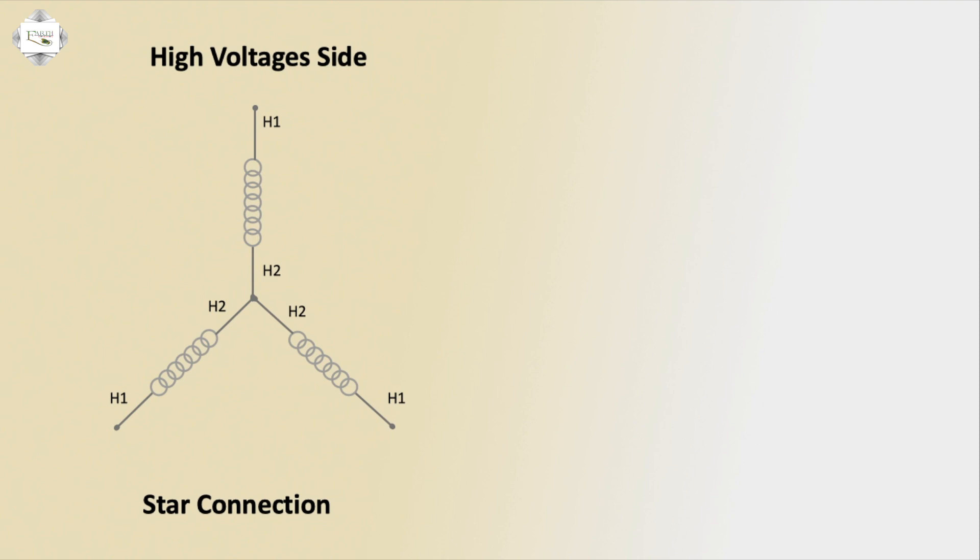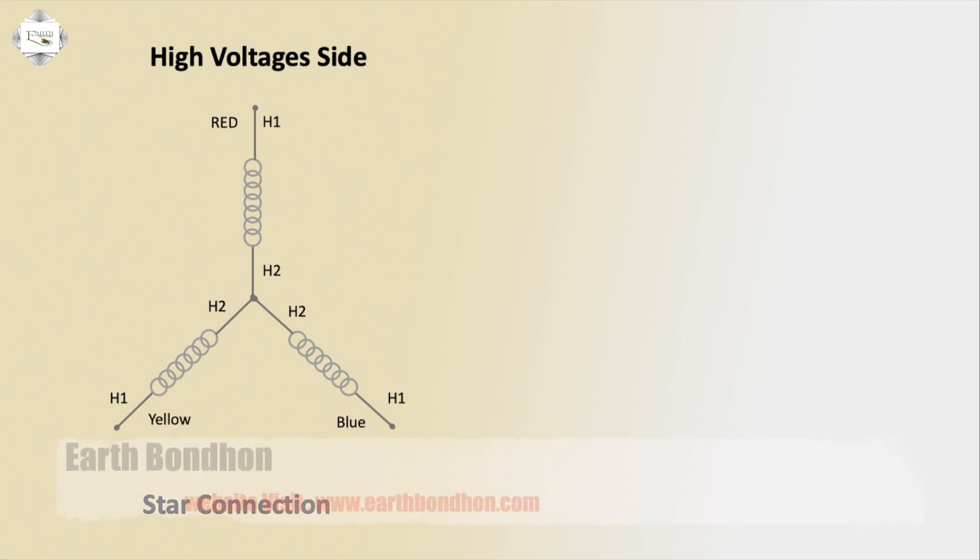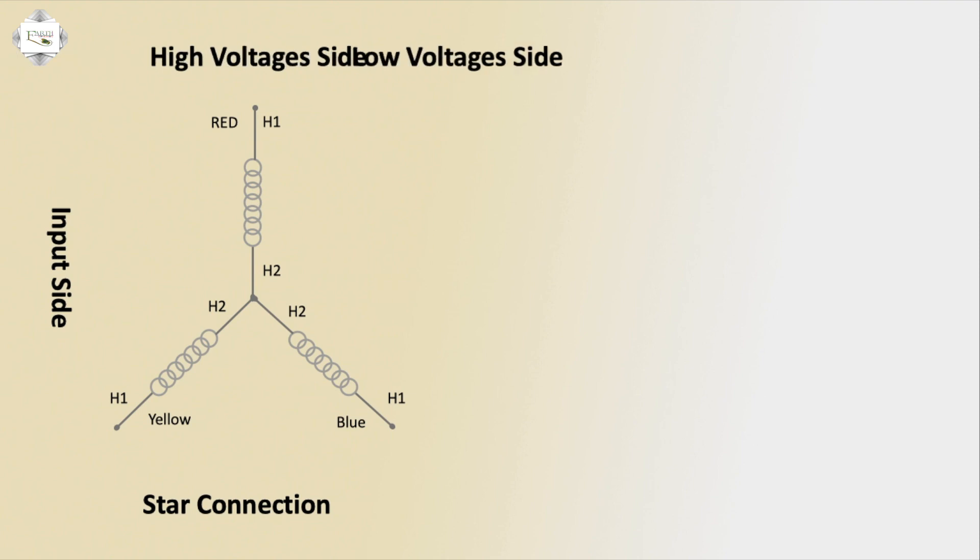High voltage side star connection red, yellow, blue, 11kV high voltage side input. Low voltage side has three coils: X1 X2, X1 X2, X1 X2, three coil same star connection. Low voltage side star connection outgoing 440V input red, yellow, blue, or neutral.